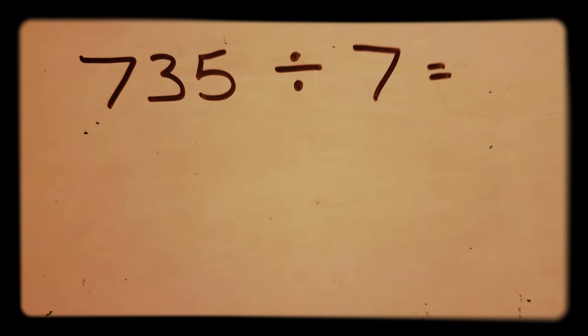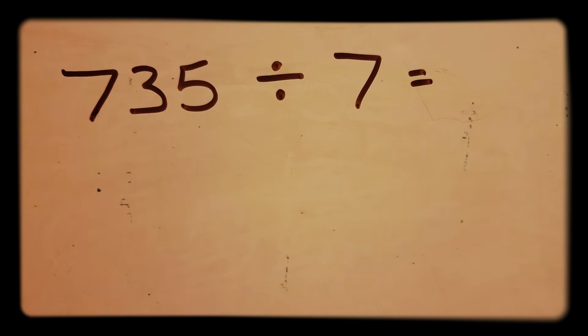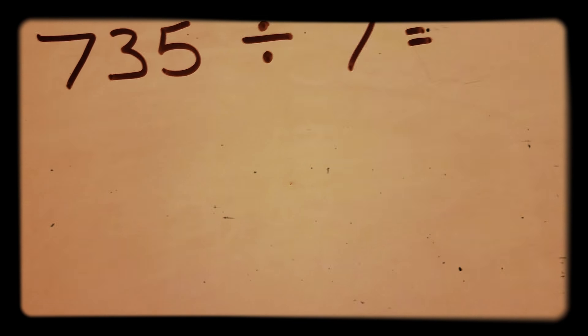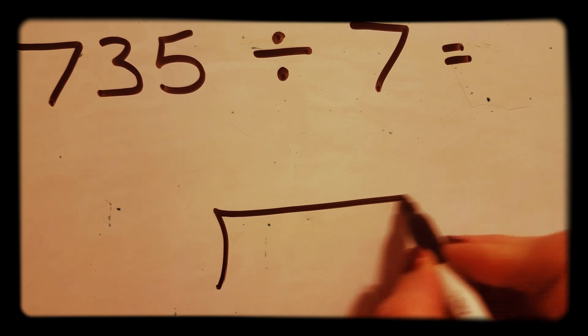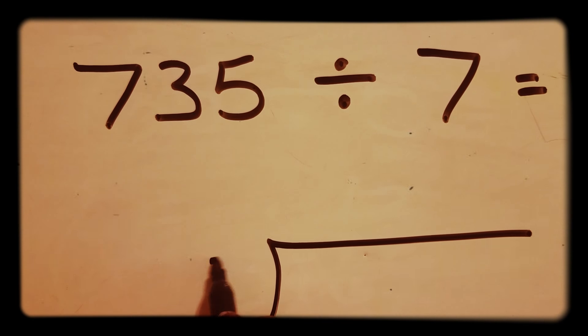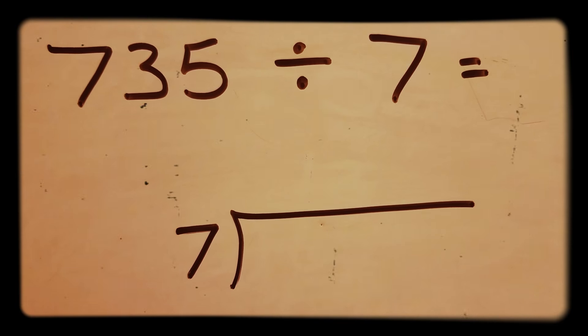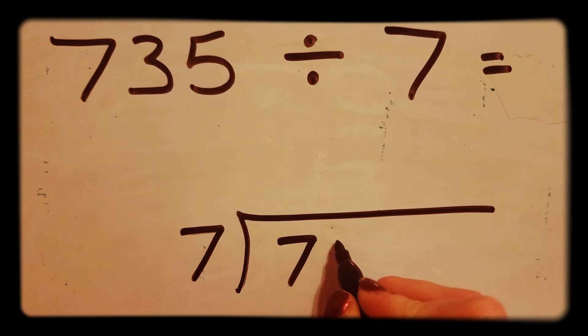Next we have 735 divided by 7. So again we want to set it up. The second number goes on the outside and the first number goes on the inside: 735.